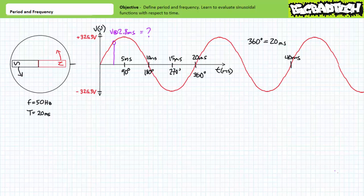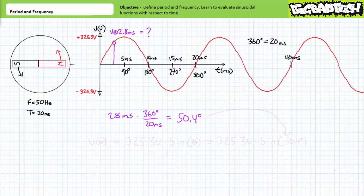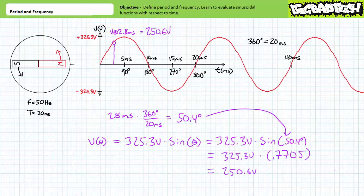Given the output voltage of a generator is a sinusoidal function dependent upon angle, if we want to know output voltage at specific times we need to convert between times and angles. For example, to find output voltage at 2.8 milliseconds, we convert: 2.8 ms × (360° / 20 ms) yields an angular position of approximately 50.4 degrees. Substituting this into the sine wave function with a peak value of 325.3 volts yields 325.3 × 0.7705, or approximately 250.6 volts. Note: if you get 43.6 volts, your calculator is in radian mode — it must be in degree mode for this to work.